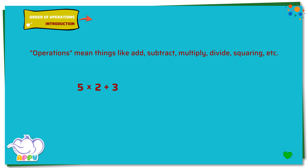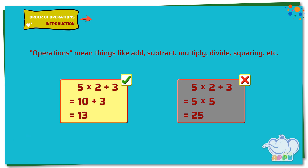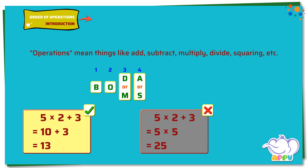The first is to multiply and then add. So, 5 times 2 is 10 and 10 plus 3 equals 13. The second way to solve this is to add 2 and 3 which is 5, and multiply with 5 which equals 25. But we know in math there can only be one right answer. The easy way to remember the order of operations is BODMAS.